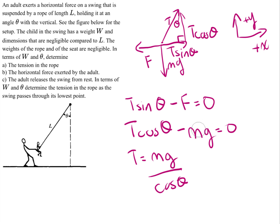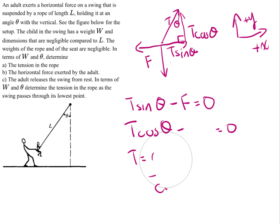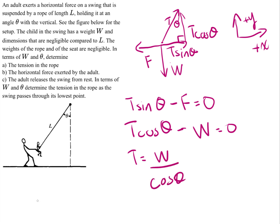From the vertical equation, we can calculate the force of tension, which is equal to mg divided by the cosine of theta. I should actually replace mg here — mg is simply the expression for the weight of the child. So the tension is equal to the weight of the child divided by the cosine of theta. That's our expression for tension: T = W / cosθ.